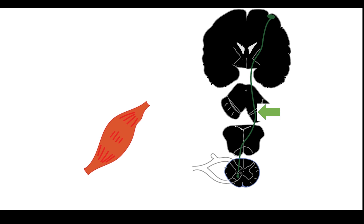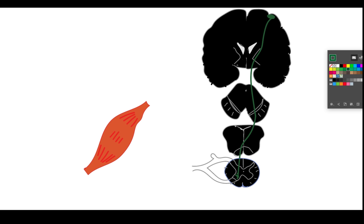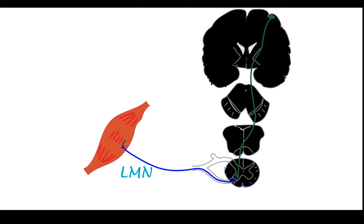These are the upper motor neurons heading towards the spinal cord. Now let me draw the lower motor neuron from the spinal cord — from the anterior horn cells. These fibers travel from the anterior horn cells, travel out of the spinal cord, and eventually end up in the muscle at the neuromuscular junction. These are the lower motor neurons. So upper motor neurons start from the primary motor area, travel down, and synapse at the anterior horn cell, and then the lower motor neurons travel all the way to the muscles.